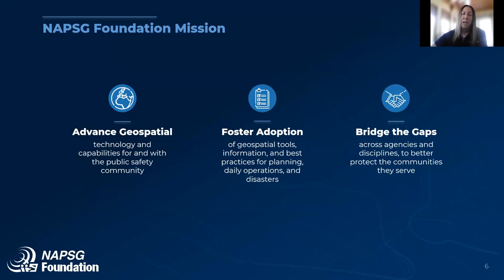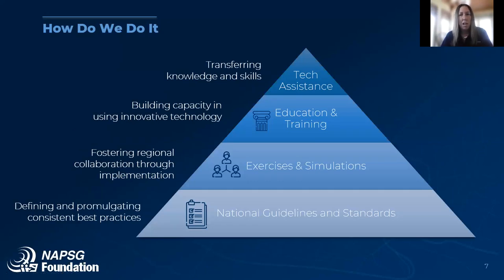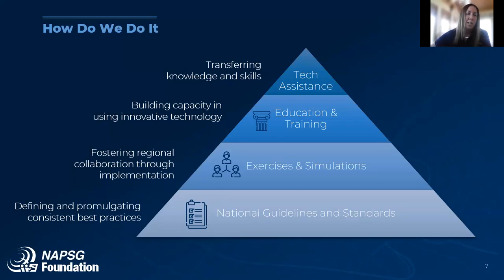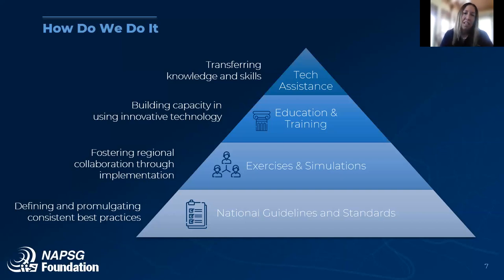We do this through three pillars: advancing the use of geospatial tools, fostering adoption of best practices, and bridging the gaps across public safety agencies and disciplines. Practically speaking, we fulfill our mission by defining and propagating consistent use of best practices through the development of national guidelines and standards. We foster collaboration through regional exercises and simulations, which serve to validate or update guidance. Through education and training like today, we aim to build community capacity — sharing examples of great work and lessons learned from locals like Daniel and amplifying resources from federal partners like FEMA.